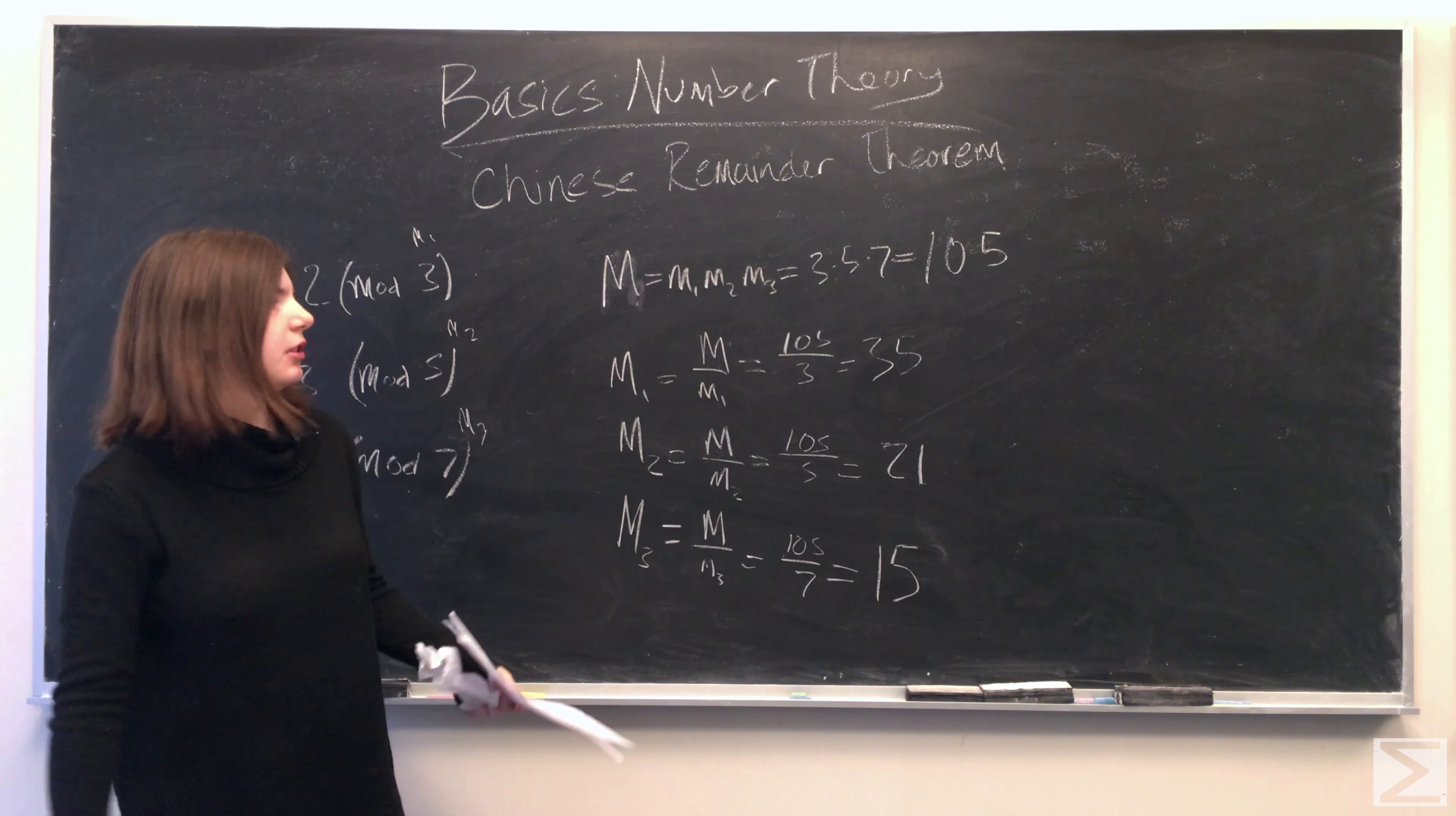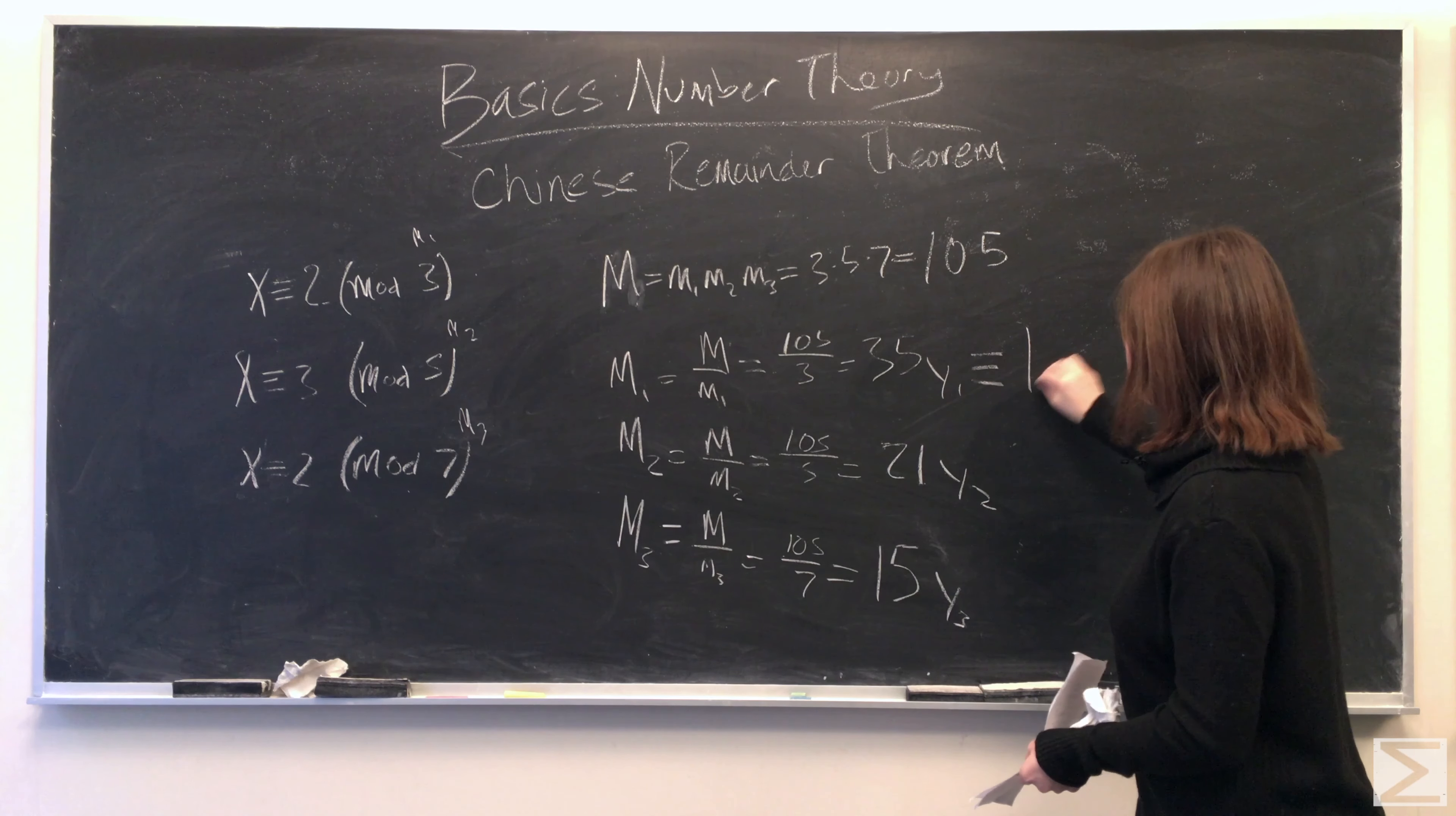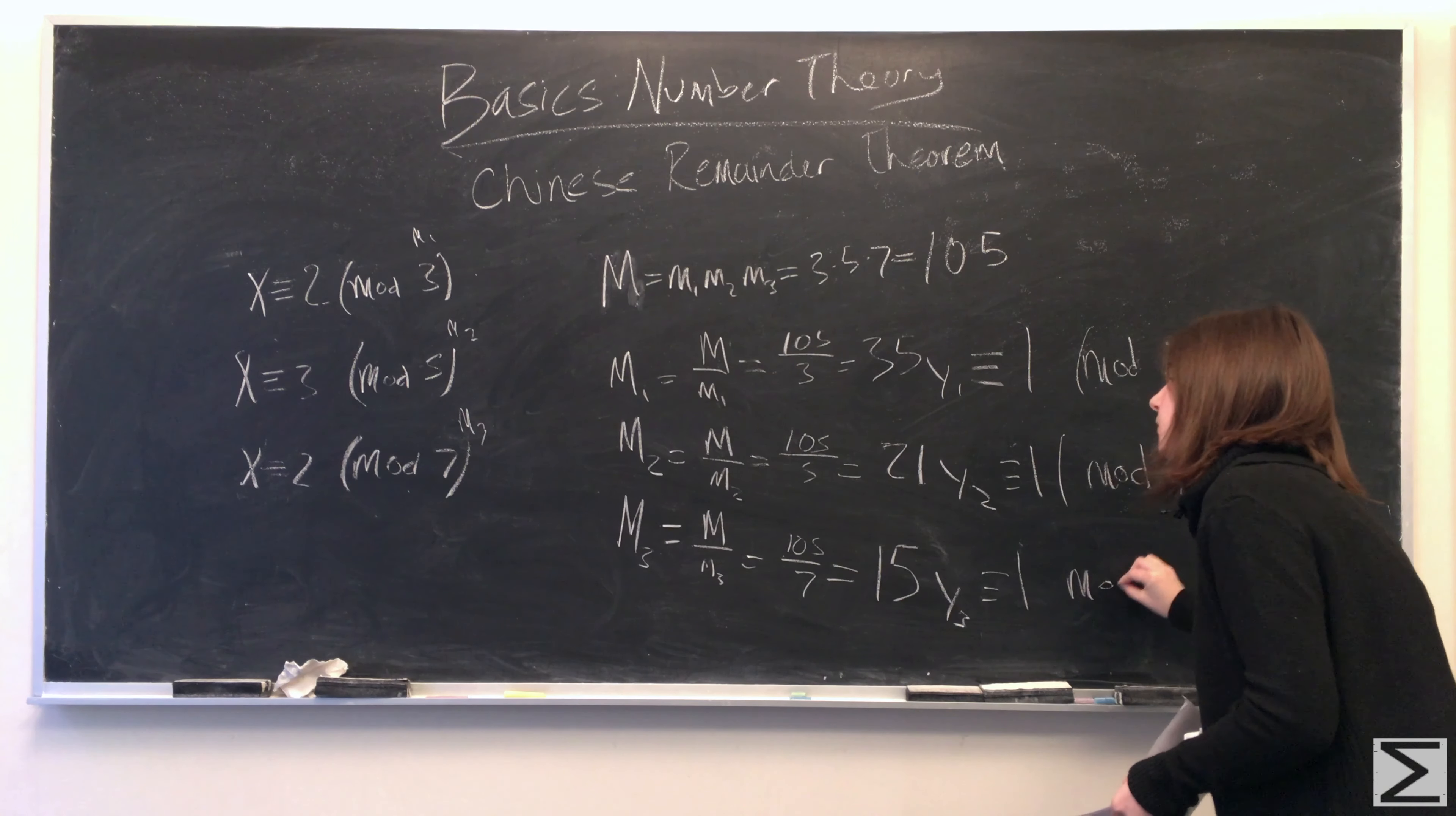And the Chinese remainder theorem says that there exists integers y1, y2, and y3, that when multiplied by each respective big M is congruent to 1 modulo m. So we have 35 times y1 is congruent to 1 modulo 3, 21y2 is congruent to 1 modulo 5, and then 15y3 is congruent to 1 modulo 7.